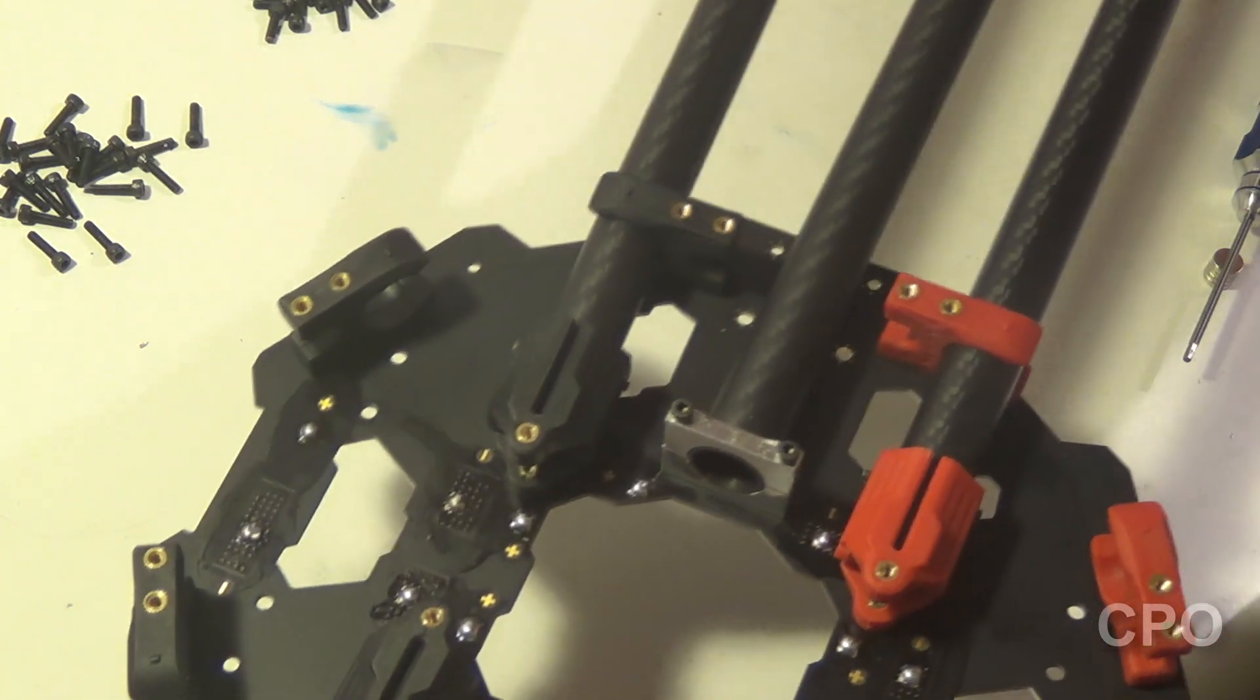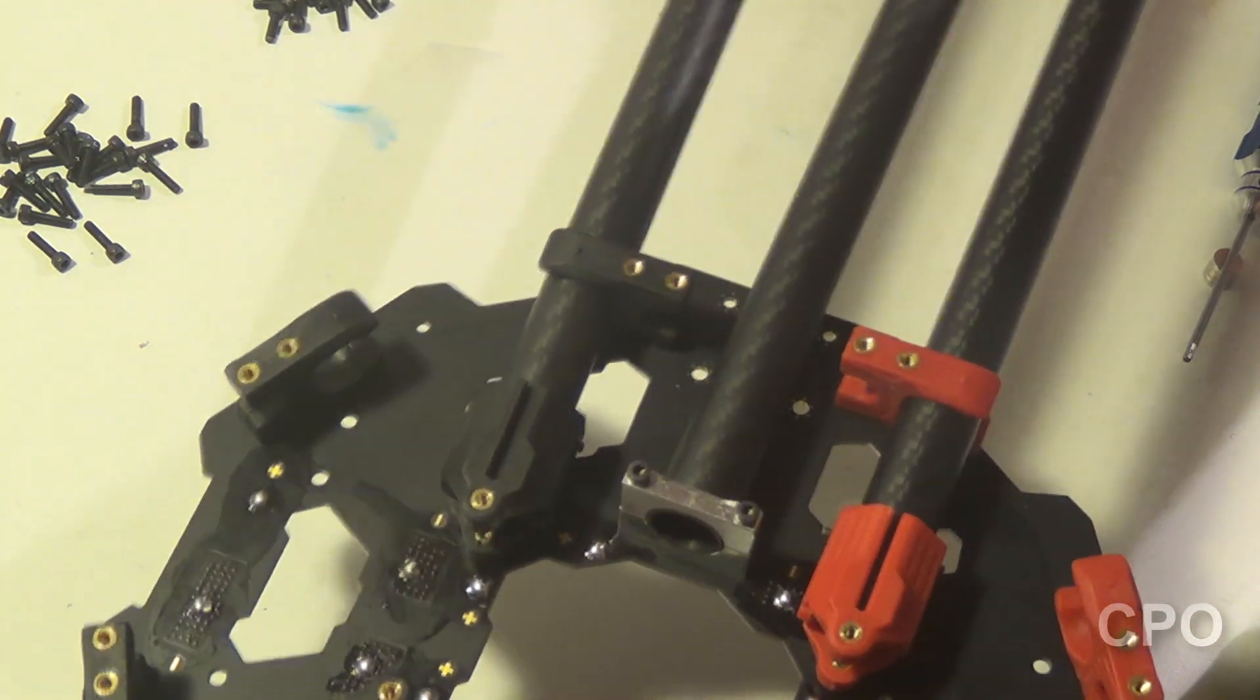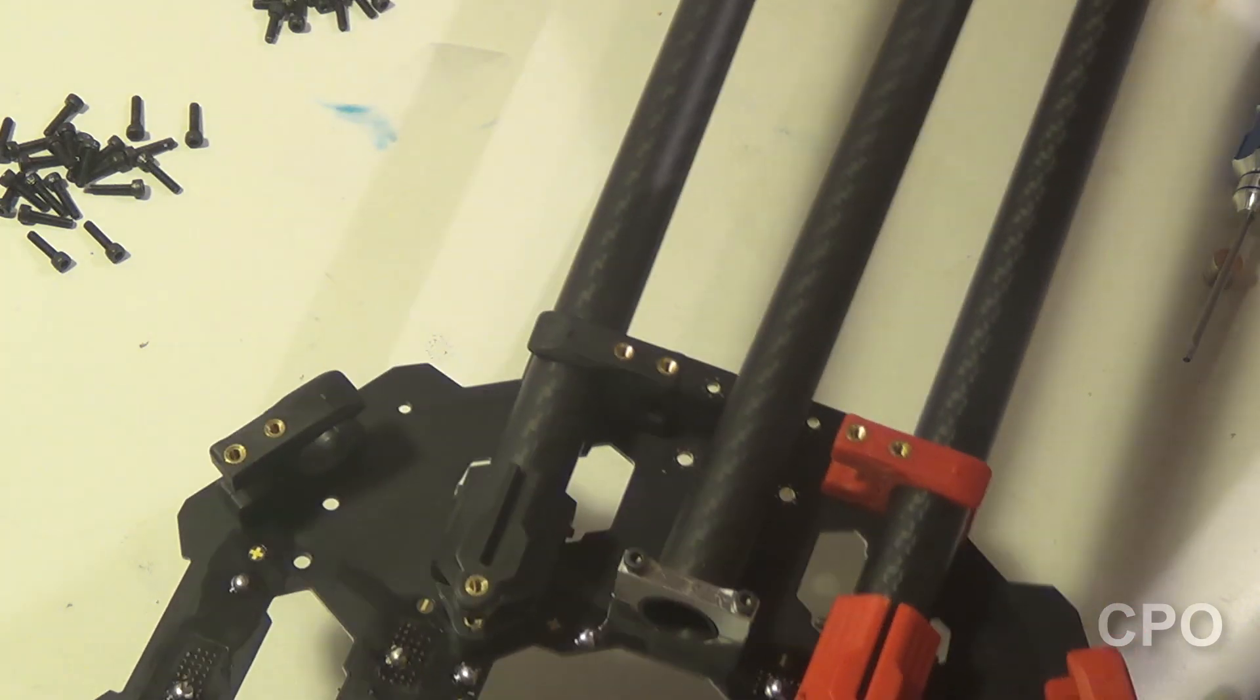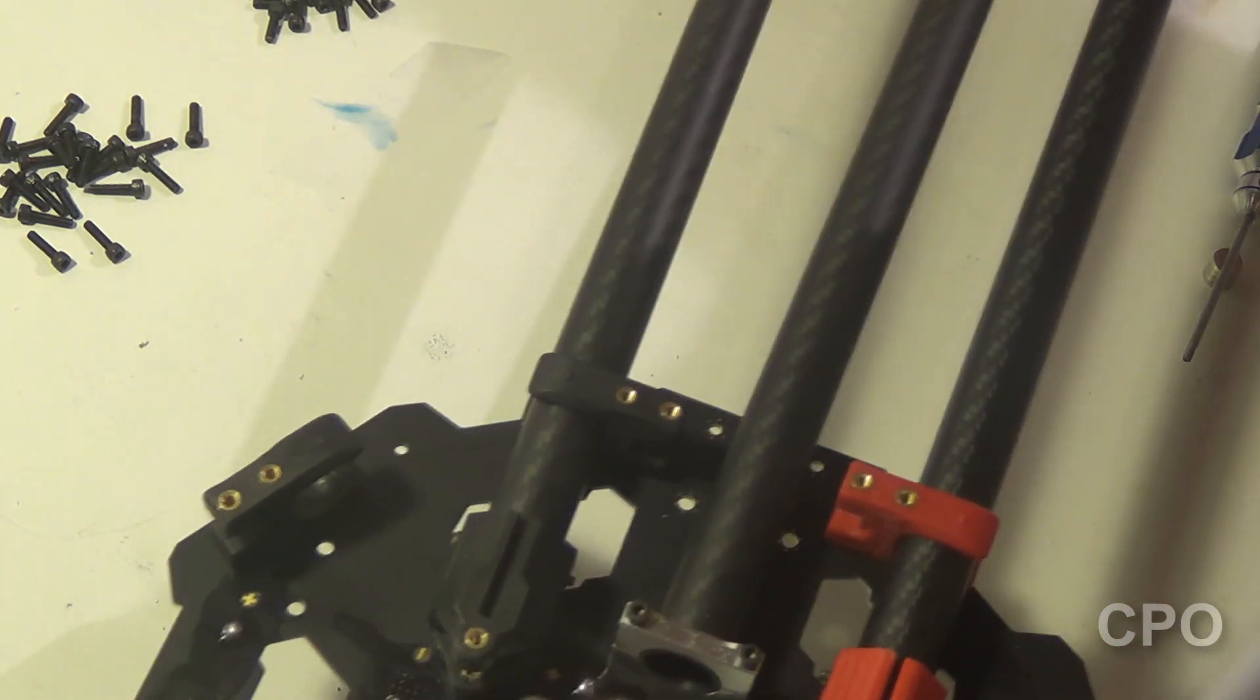To get these through the boom, it's actually easier if you flatten them out and just push the flight controller cable through first. And oftentimes, you can get that to slip through.